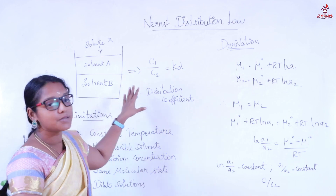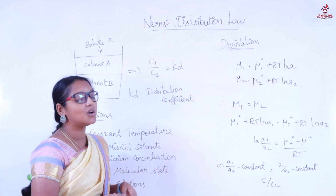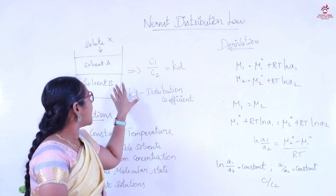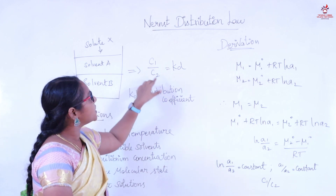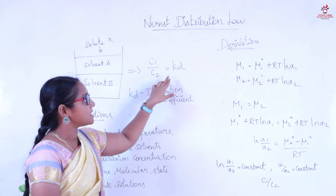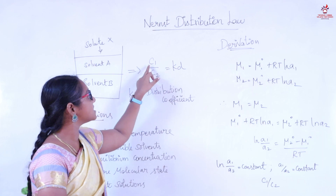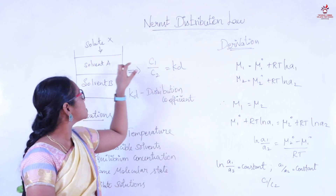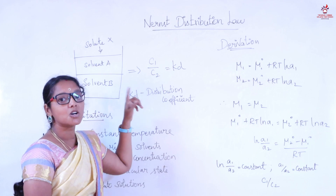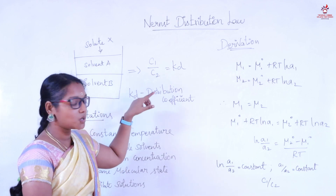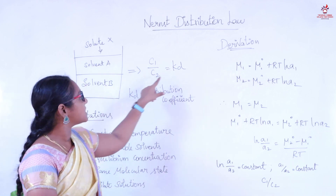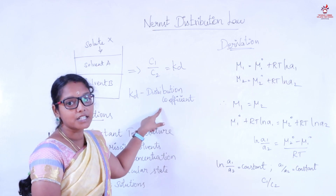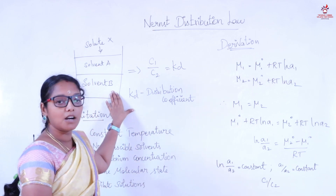This is the Nernst Distribution Law, otherwise called the distribution law or partition law. We denote it as C1 divided by C2 equals KD, where C1 is the concentration of the solute in solvent A, C2 is the concentration of the solute in solvent B, and KD is the distribution coefficient.